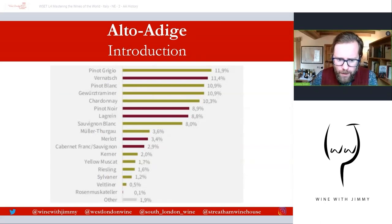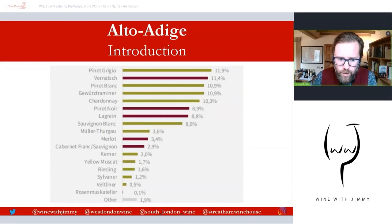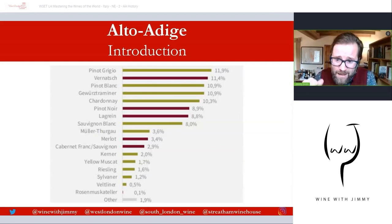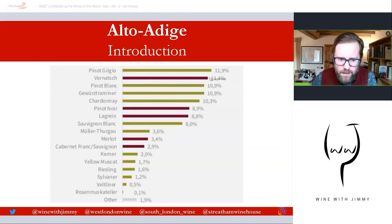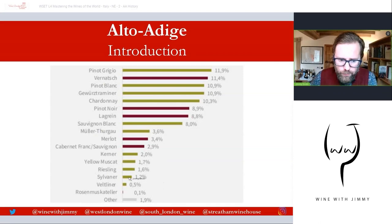Turning to the Alto Adige grape list: Pinot Grigio has recently overtaken Schiava — also called Vernatsch — as the leading variety. Alto Adige is famed for a big diversity of both indigenous and international varieties. Schiava is the leading red grape at around 11–12%, while Pinot Grigio is the leading white. Pinot Bianco and Gewürztraminer are very important here, as are Chardonnay, Pinot Noir, Lagrein, and varieties like Kerner, Sylvaner, and Riesling, which are gaining massive importance. Alto Adige wines are generally good to very good, with some outstanding examples, typically around the mid-price point with some higher-priced wines.